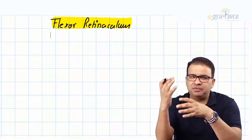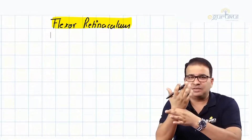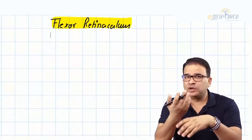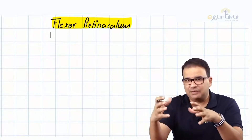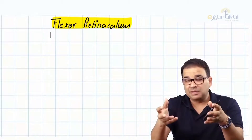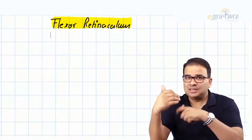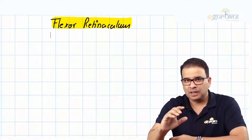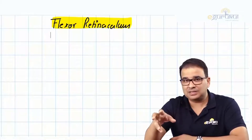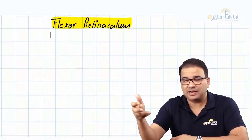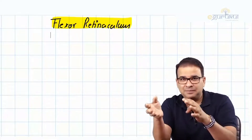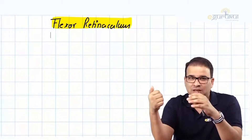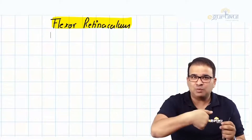Now, the flexor reticulum — unlike the wrist, where we have the flexor and extensor reticulum on the palmar and dorsal aspects respectively — it's not exactly the same way in the foot because we have three compartments of muscles going down. The extensor reticulum is conventional because it is on the dorsal surface. But the flexor reticulum as well as the peroneal reticulum are present more toward the medial and lateral sides respectively.